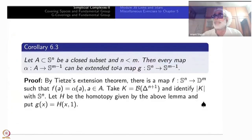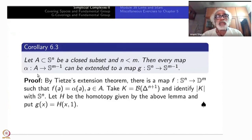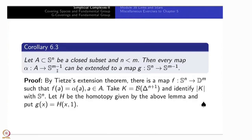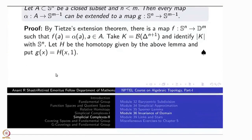Thus any function from A to a sphere can be extended to the whole of S^n, provided n is less than or equal to m minus 1. The homotopy-theoretic background is now complete; we now move to purely point-set topology.